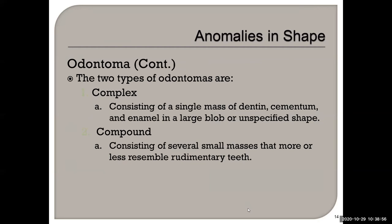An odontoma can be complex or compound. The complex type consists of a single mass of tooth-like structures — it's just one unspecified blob. A compound type consists of several small masses that more or less resemble rudimentary teeth. So a complex is one blob and a compound is more than one blob that looks like a tooth.